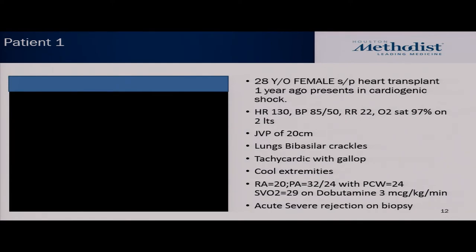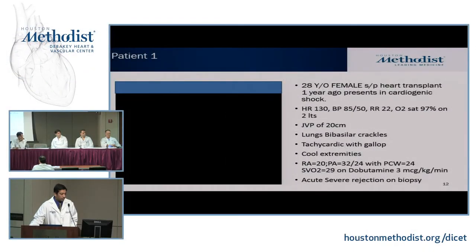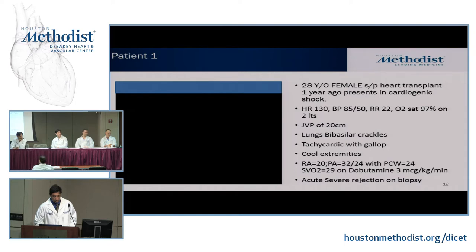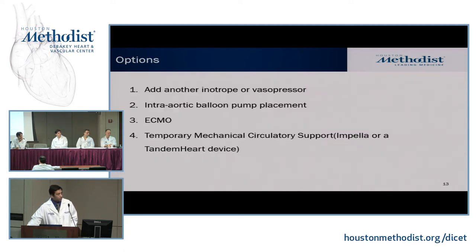We have a 28-year-old female who is one year post-heart transplant, presenting in cardiogenic shock. Heart rate 130, blood pressure 85/50, respiratory rate 22, saturation 97% on two liters, JVP 20 centimeters, bibasilar crackles, gallop, cool extremities. She was taken to the cath lab for right heart cath and biopsy, showing elevated biventricular filling pressures with SVO2 of 29. She's already on dobutamine at 3 mcg/kg/min, has severe acute rejection on biopsy. The question to the panel: what would you do next — add another inotrope, vasopressor, intra-aortic balloon pump, ECMO, or temporary mechanical circulatory support?